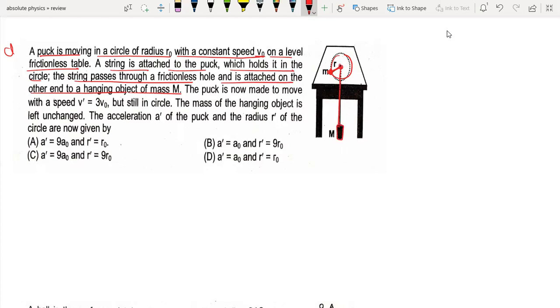Now for case 2, the puck is made to move with speed 3V0. The speed has tripled to 3V0, but the mass of the hanging object is left unchanged.